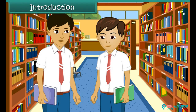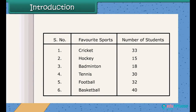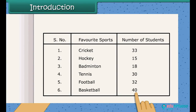Ravi, have you done today's maths homework? Yes, I have gathered some information about the different sports liked by the students of our class. Okay, but how will you interpret which is the favorite sport among the students? It's easy. I have arranged the data in tabular form. Now by looking at the data I can say basketball is liked by the highest number of students.